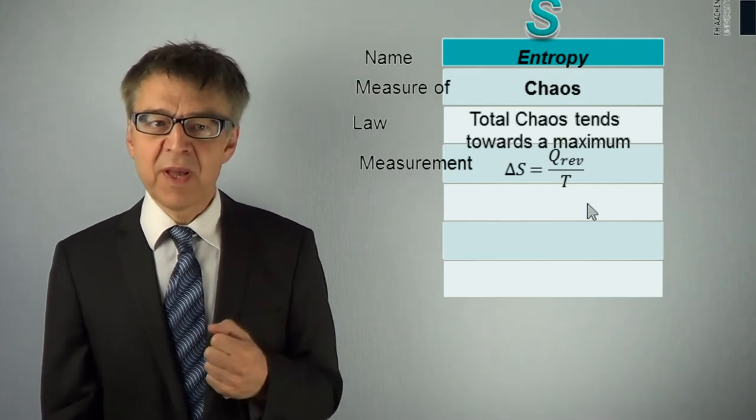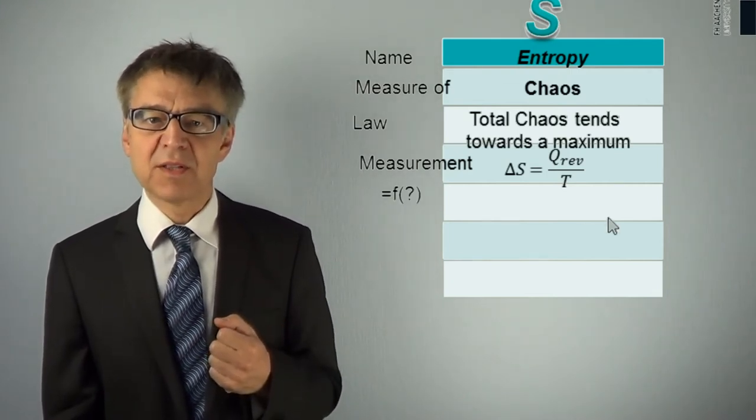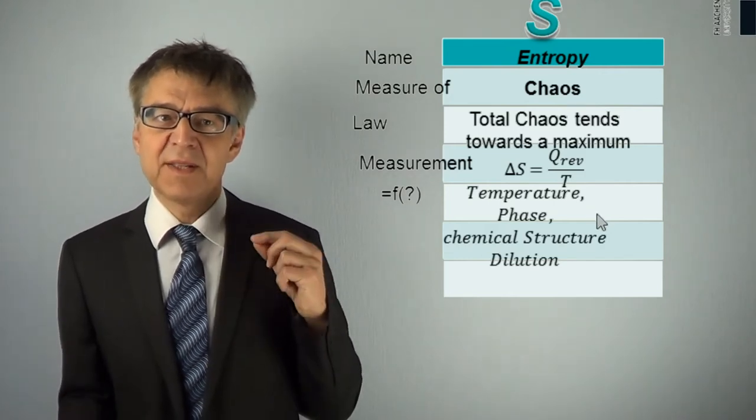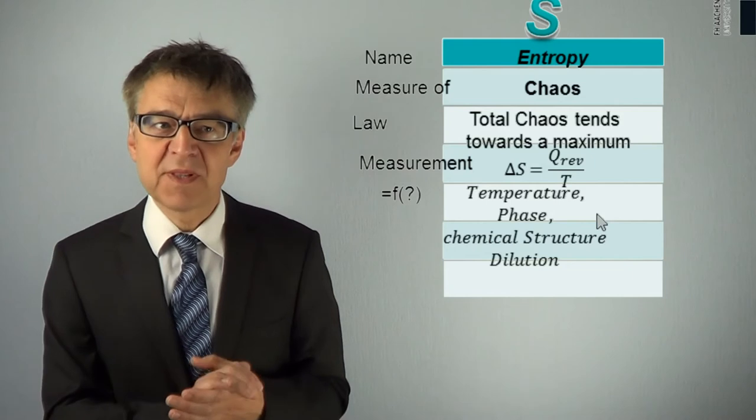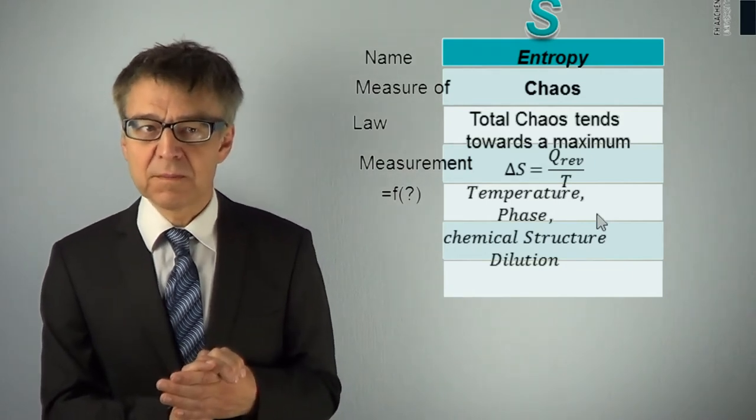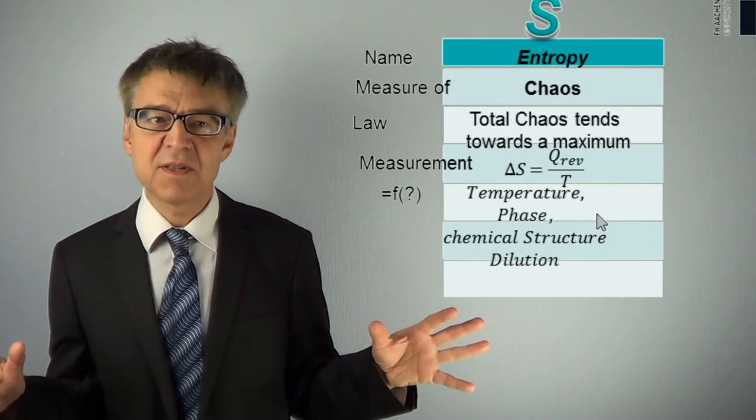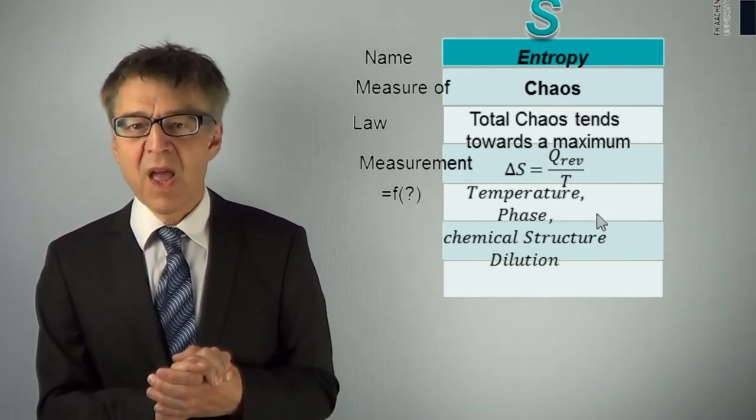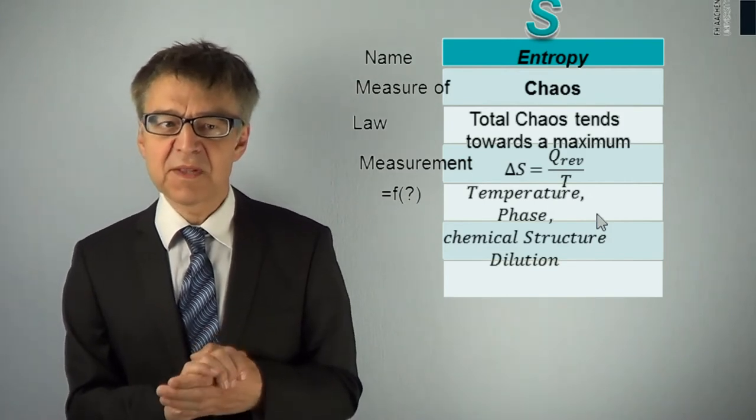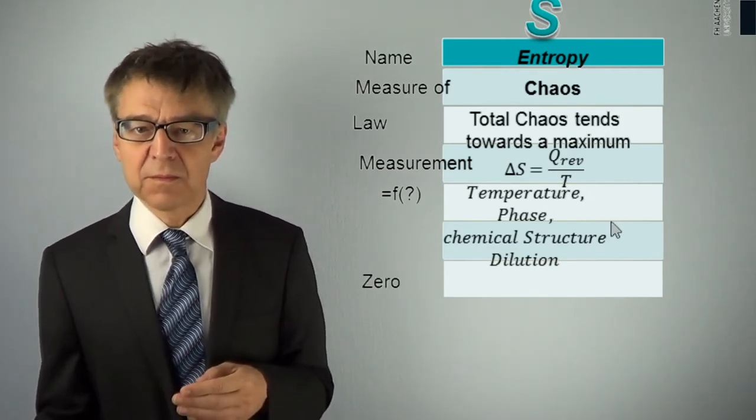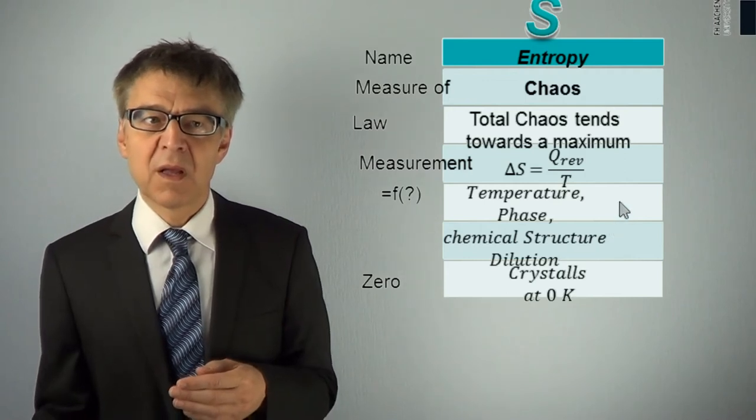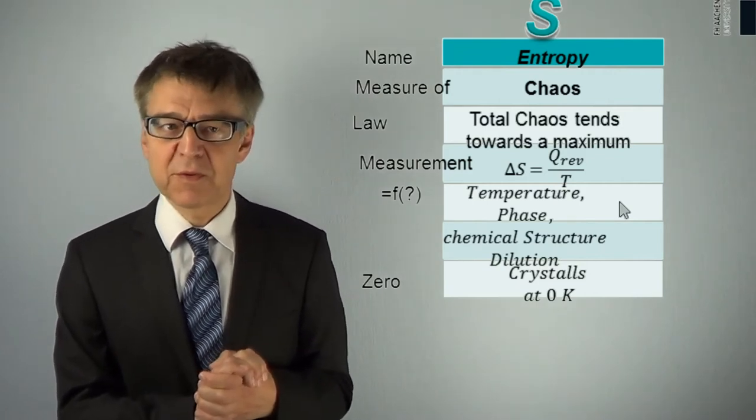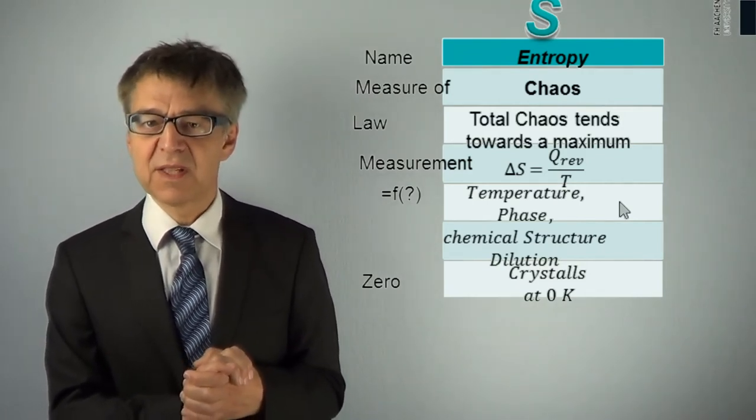As enthalpy, entropy depends on temperature, phase and chemical structure. And in addition, entropy still depends very much on the dilution. The more dilute a system, the greater its chaos, the greater its entropy. Entropy has got, in contrast to the enthalpy, a natural zero. This is the main message of the third law. The entropy of a perfect crystal is zero at zero Kelvin.